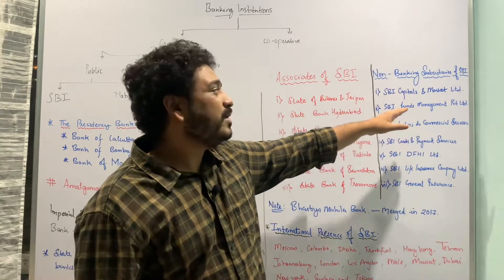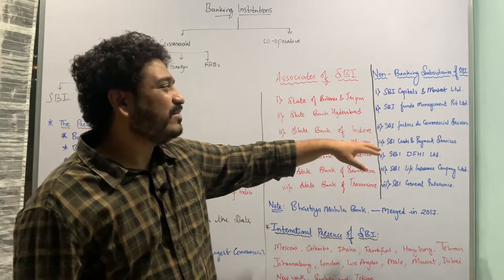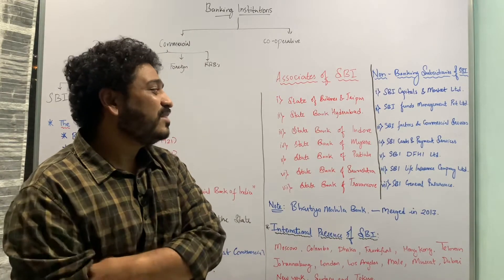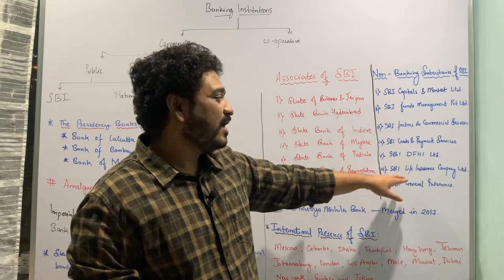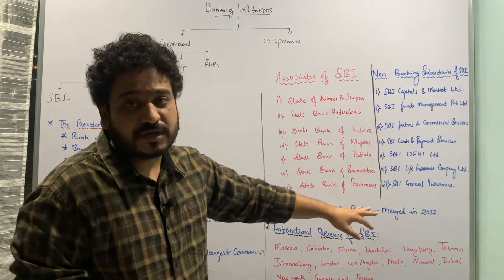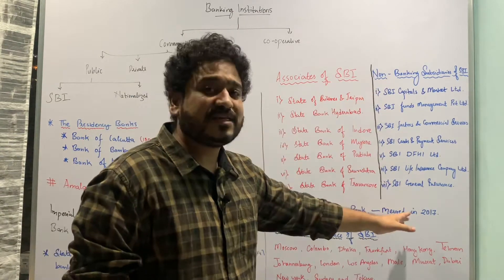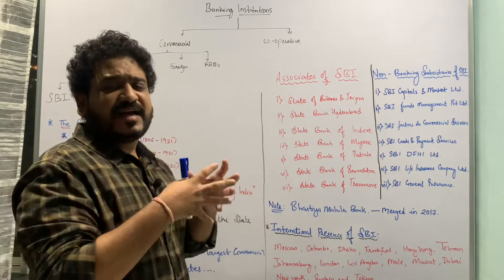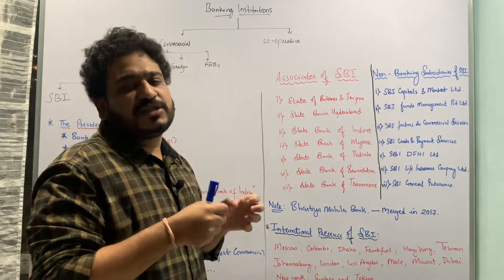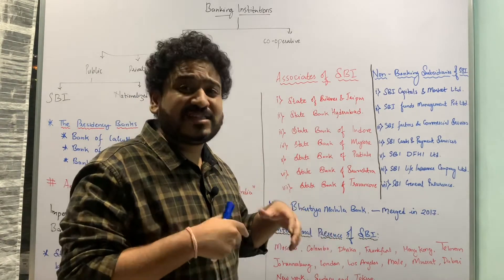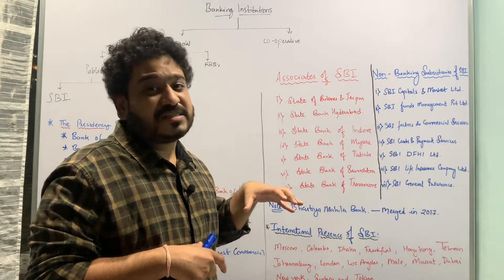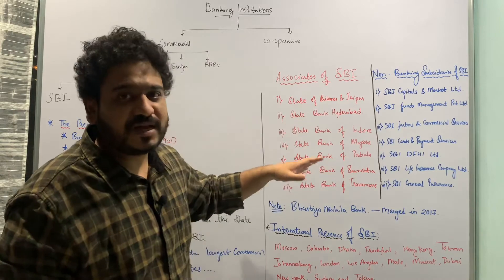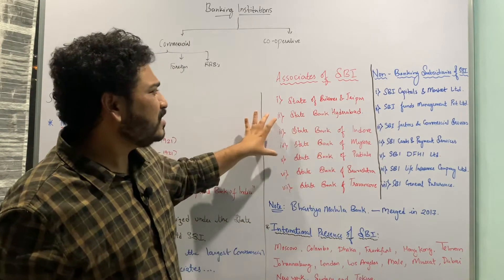The non-banking subsidiaries of the State Bank of India include SBI Capital Markets Limited, SBI Fund Management Private Limited, SBI Factors and Commercial Services, SBI Cards and Payment Services, SBI DFHI Limited, and the Life Insurance Company as well as the General Insurance Company of SBI. Collectively, all of these are under the parent organization — the State Bank of India — making it the largest commercial bank in India and one of the largest in the world.